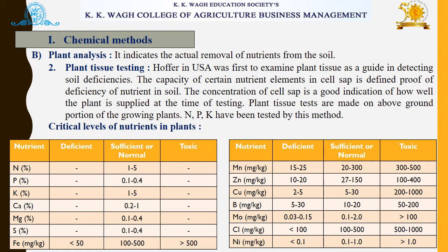Under plant analysis, the next point is plant tissue testing. Hofer in the USA was the first to examine plant tissue as a guide in detecting soil deficiencies. Critical levels of nutrients in plants are given, including nitrogen, potassium, and phosphorus with their sufficient or normal range of nutrient concentration. A second table shows different micronutrients with their deficient, sufficient, and toxic nutritional concentrations.